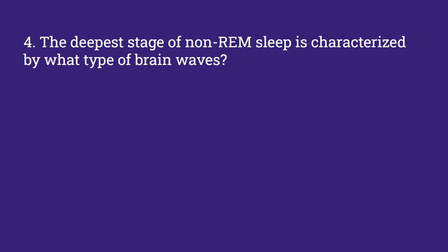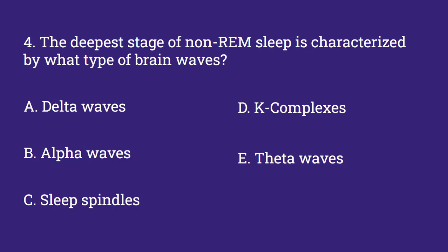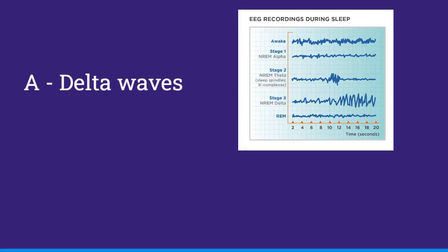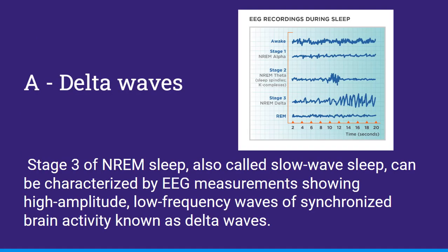The deepest stage of non-REM sleep is characterized by what type of brain waves? Options: delta waves, alpha waves, sleep spindles, k-complexes, theta waves. And this is A, delta waves. Stage 3 of non-REM sleep, also called slow-wave sleep, can be characterized by EEG measurements showing high-amplitude, low-frequency waves of synchronized brain activity, known as delta waves.